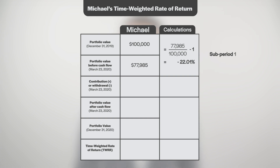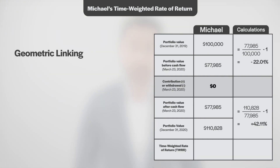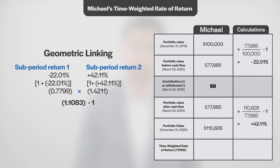Next, we'll calculate Michael's return for sub-period 2, from March 23rd, 2020 to December 31st, 2020. During the second sub-period, the portfolio started at $77,985 and increased to $110,828 by year-end. Dividing the ending value by the beginning value and subtracting 1 gives us a sub-period return of positive 42.11%. Finally, we'll geometrically link Michael's sub-period returns to obtain his time-weighted rate of return for 2020. To do this, we add 1 back to each sub-period return, multiply the results together, and then subtract 1. Michael ends the year with a time-weighted rate of return of 10.83%.